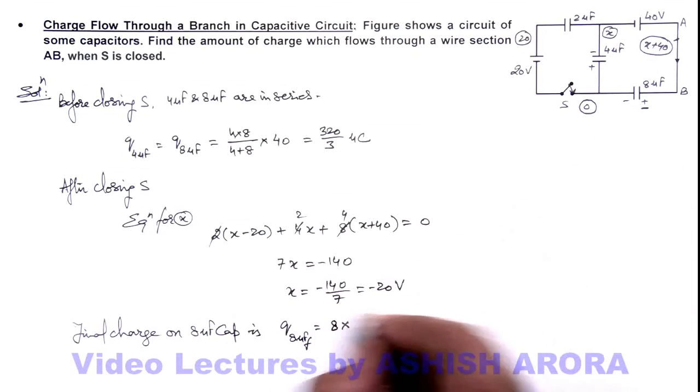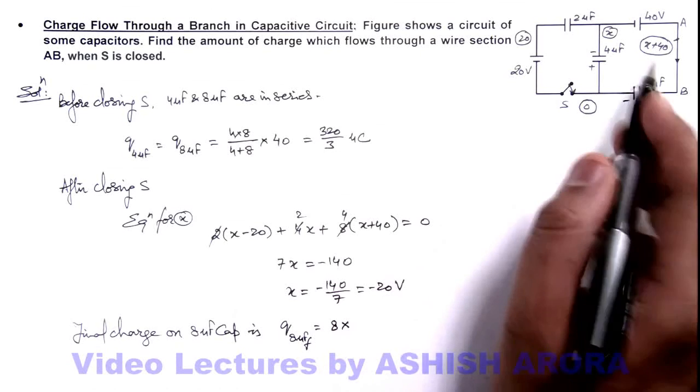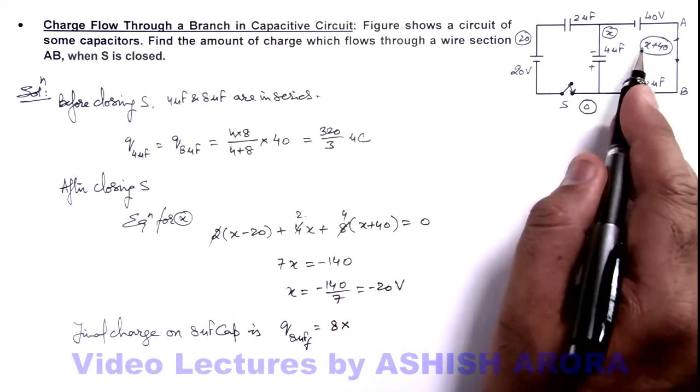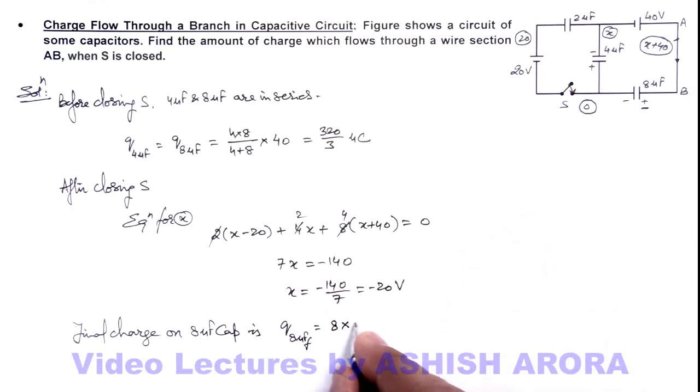So if the value of x is -20, the potential at B of this circuit will be +20. So this will be 20, which is 160 microcoulombs.